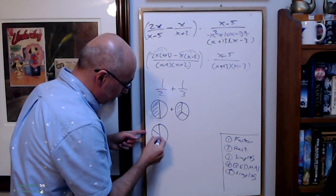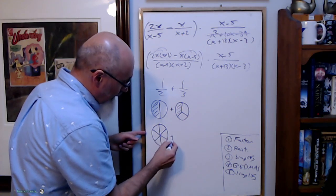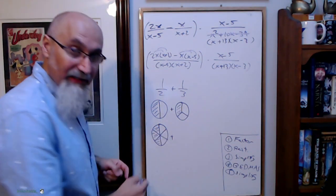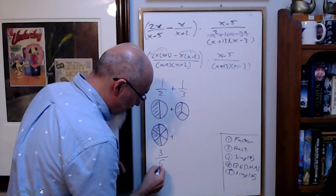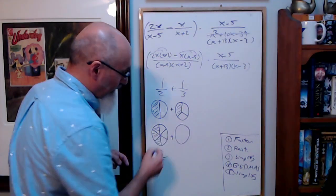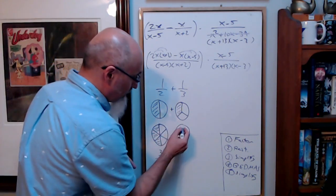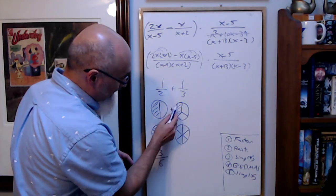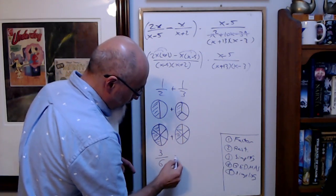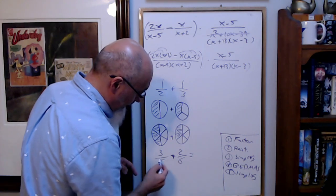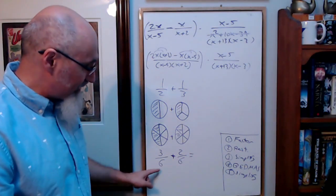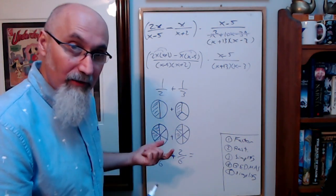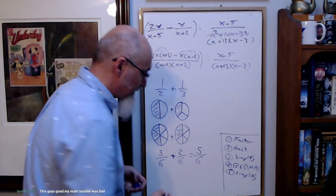Here's the visual: we're going to take the whole thing and break it into six pieces. One out of two means a half, which means we're taking three out of six — so this becomes 3 over 6. For 1 over 3, we break it into six pieces and we're taking two, so this becomes 2 out of 6. Three over six plus two over six — they have the same number of pieces, so we just add them up: one, two, three, four, five — five over six.